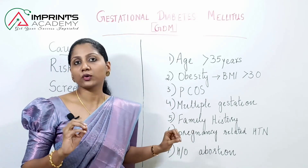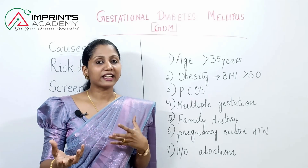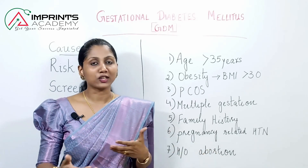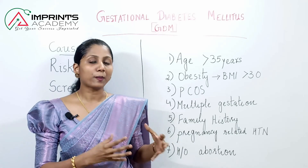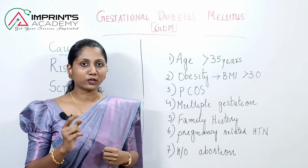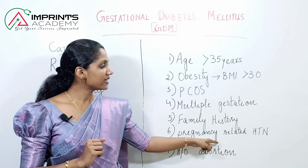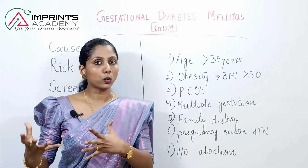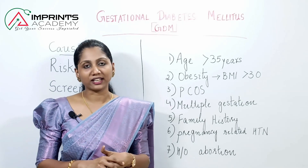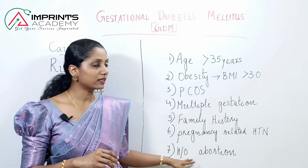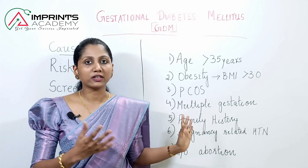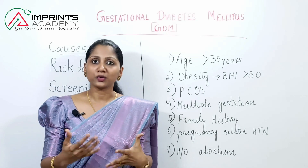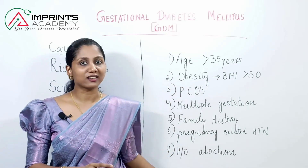Family history is also a risk factor — specifically a first-degree relative such as parents or siblings with a history of diabetes. Pregnancy-related hypertension is another risk factor. Additionally, a previous history of abortion is considered a risk factor for GDM.